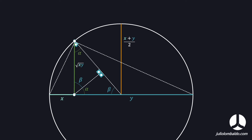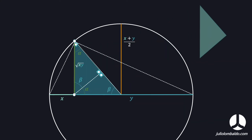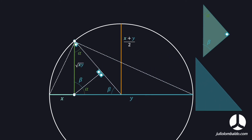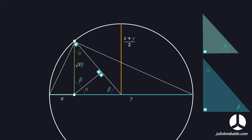We have two similar triangles. By comparing these triangles with angles alpha, beta, and 90 degrees, we can compare all their measures. The hypotenuse of the larger triangle is formed by the arithmetic mean — that is, (X plus Y) divided by 2. One side corresponds to the geometric mean.